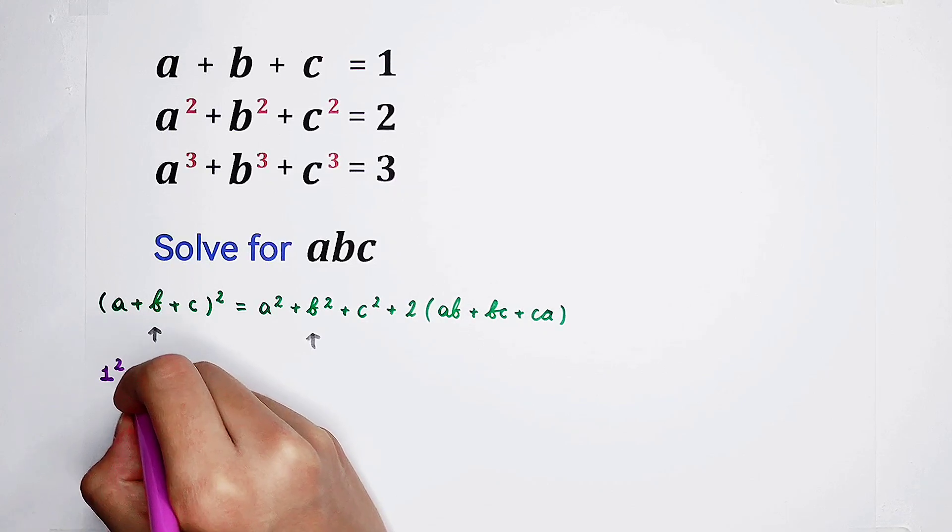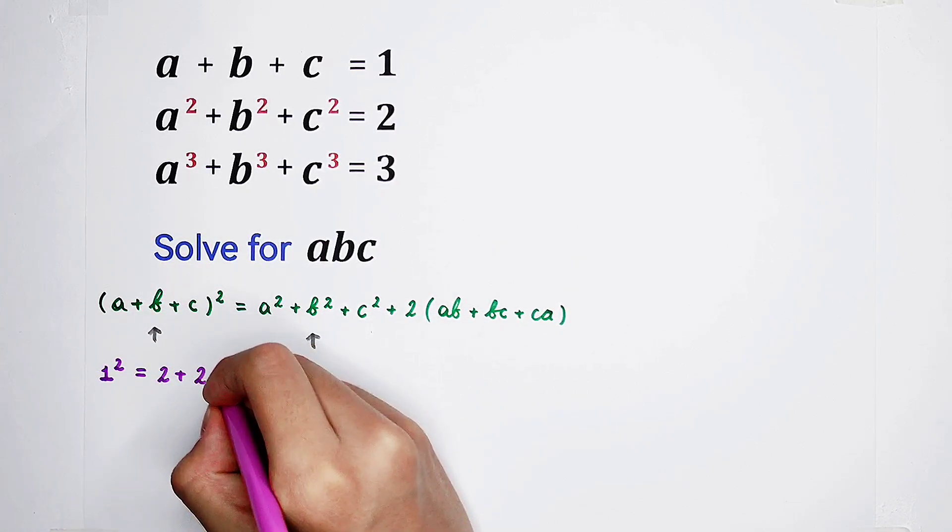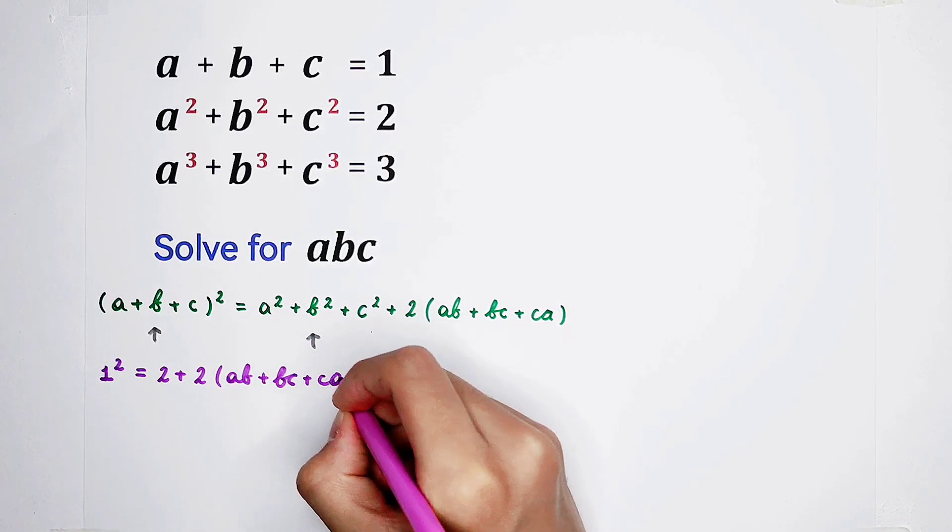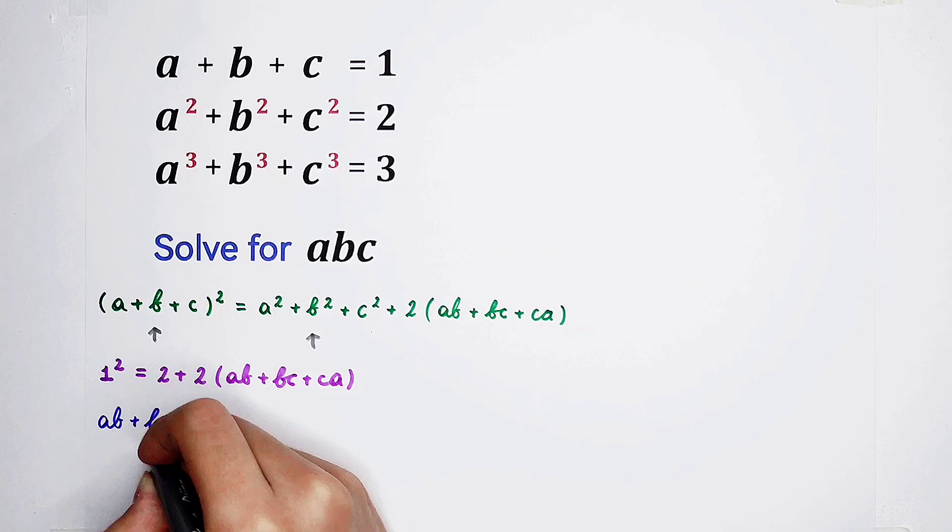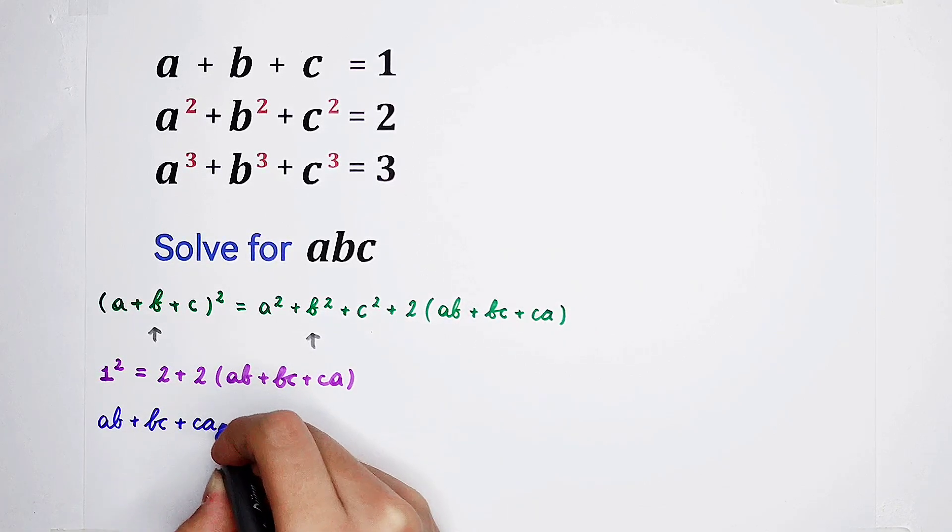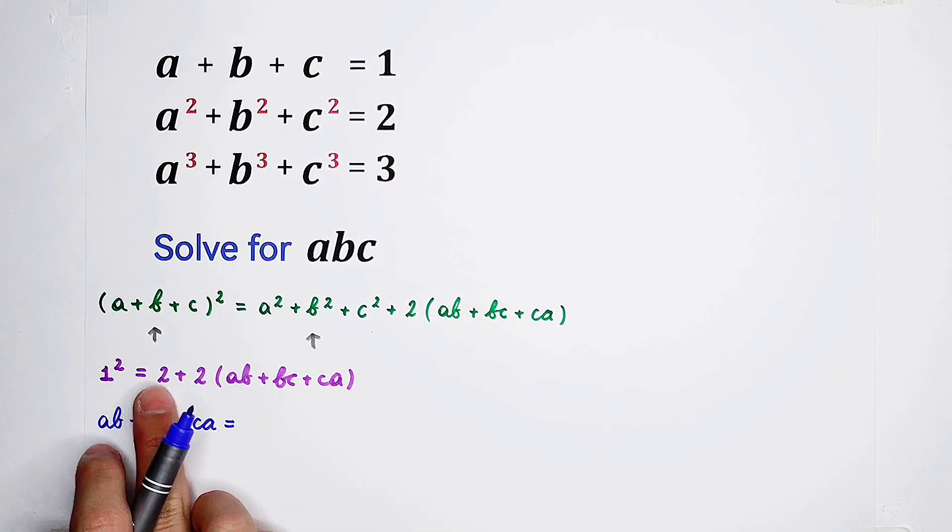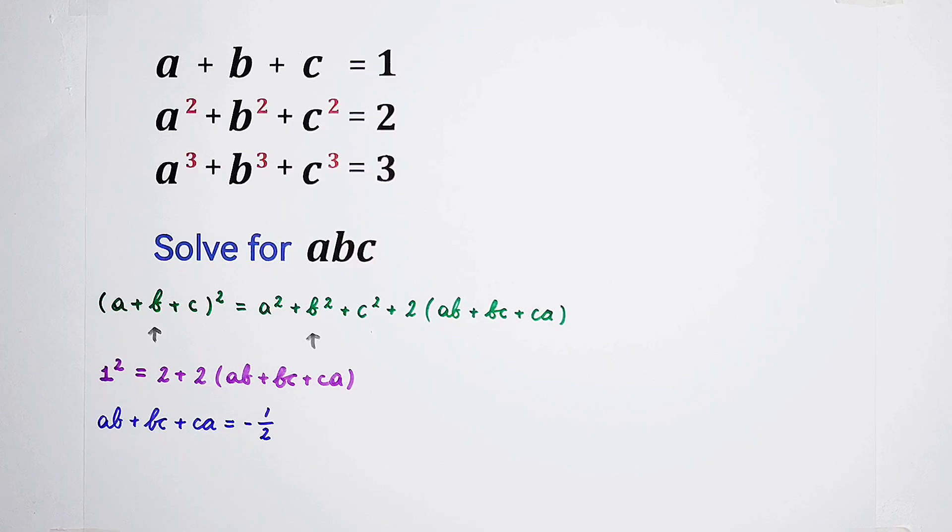1 squared on the left hand side. a squared plus b squared plus c squared is 2. It's 2 plus 2 times ab plus bc plus ca. It is equal to 1 squared minus 2, which is negative 1, and then divided by 2 on both sides, so it is negative 1 over 2. We've got the value of AB plus BC plus CA.